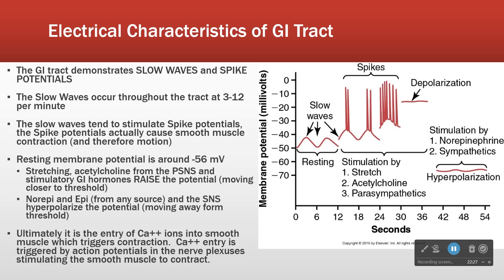Things that move the membrane potential closer to depolarization include stretch, acetylcholine, and parasympathetics. If you remember that parasympathetic is rest and digest, not surprisingly, when it sends its signal, the gut responds with stimulation — it becomes more active in response to acetylcholine or any of the other parasympathetic signals. Stretch also: if we have an area of gut that's being stretched out, that area needs to move faster to spread that material out over a greater distance. So stretch all by itself also triggers spikes and depolarization.